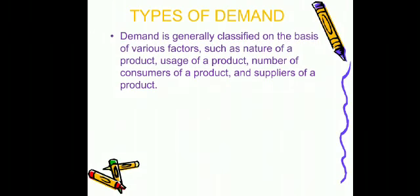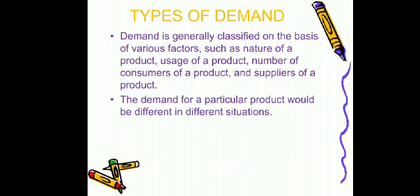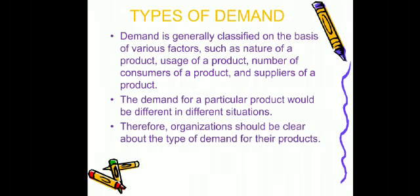Types of demand. Demand is generally classified on the basis of various factors such as nature of product, uses of a product, number of consumers of a product, and suppliers of a product. The demand for a particular product would be different in different situations, so organizations should be clear about the type of demand for their product.